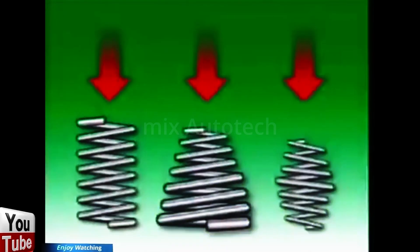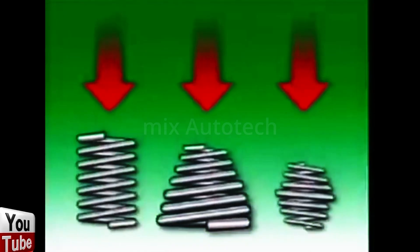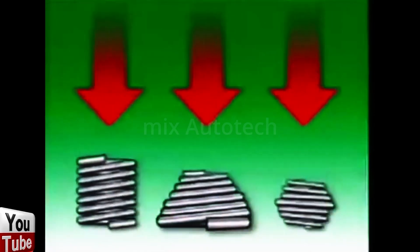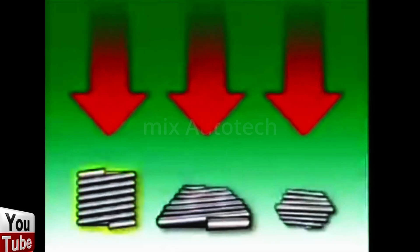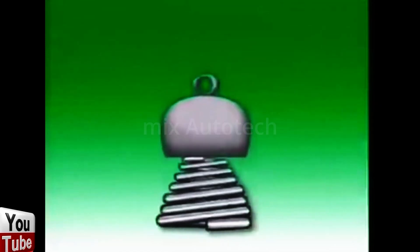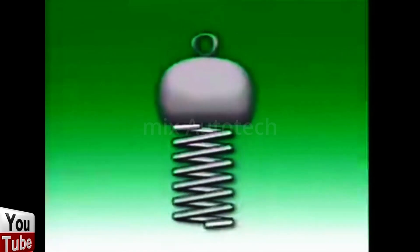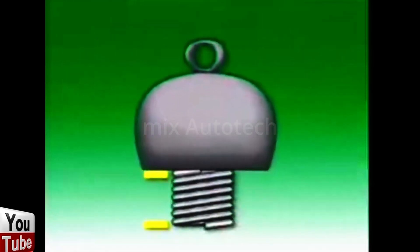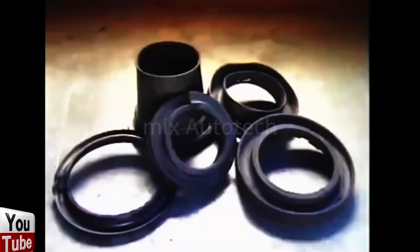As conical and barrel shaped springs compress they collapse into themselves, giving a longer suspension travel for the length of the spring than for a cylindrical spring, which gives a softer ride for light load situations and a harder ride for heavy load situations. As a cylindrical coil compresses it can become coil bound which limits its travel. Coil springs can look alike but give very different load ratings which are often colour coded for identification. They normally use rubber pads to prevent transmission of noise and vibration.